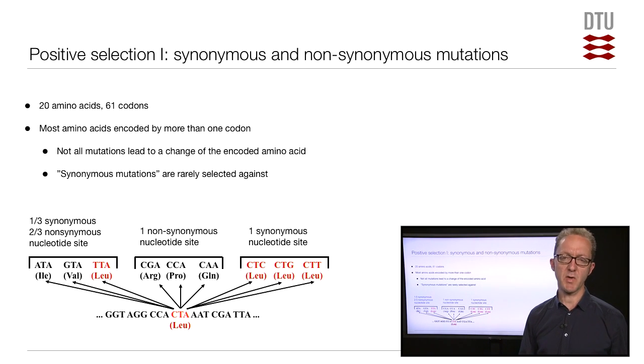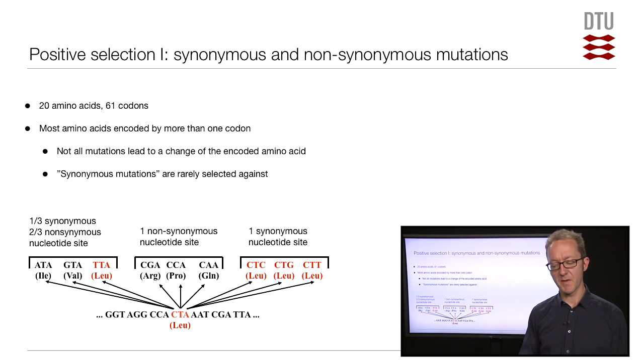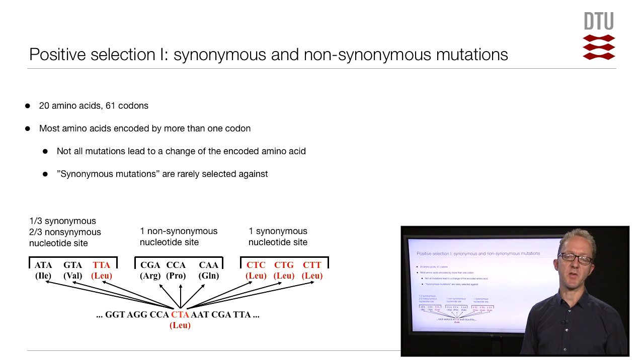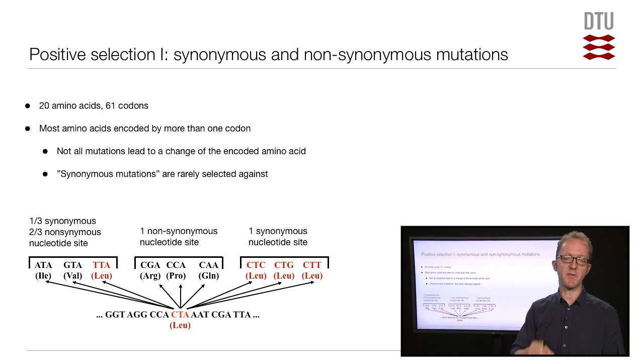This means that most amino acids are encoded by more than one codon. A large group of amino acids have, for instance, four different codons that encode them. This means that some DNA mutations are silent. Some DNA mutations will not change the encoded amino acid. Such silent or synonymous mutations generally do not have a huge impact on organismal fitness. They will not change the encoded protein.